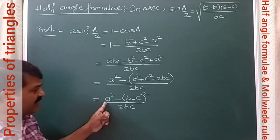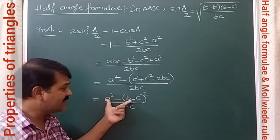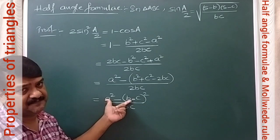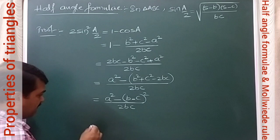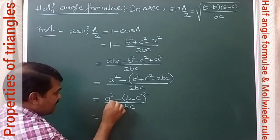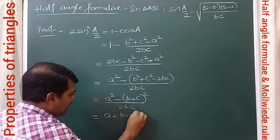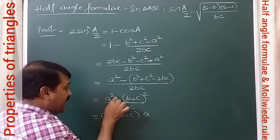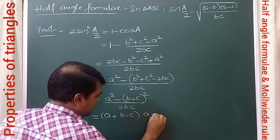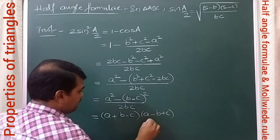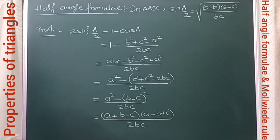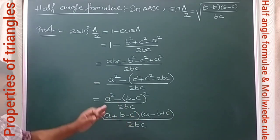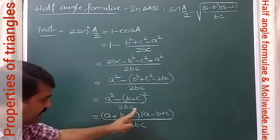We can write b² + c² − 2bc as (b − c)², so the numerator becomes a² − (b − c)², which is in the form A² − B². We can factor this as (a − (b − c))(a + (b − c)), that is (a + b − c)(a − b + c), all divided by 2bc.